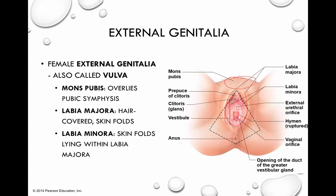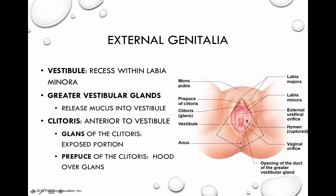The labia majora are covered in pubic hair, which delineates them from the labia minora — skin folds that lie within the labia majora and are smooth and often lubricated due to secretions in the vestibule. The vestibule is the name given to the area contained within the labia minora. Within the vestibule are greater vestibular glands, whose little ducts can be seen on each side — they release mucus into the vestibule to help lubricate that area, with an increase in mucus during sexual arousal.